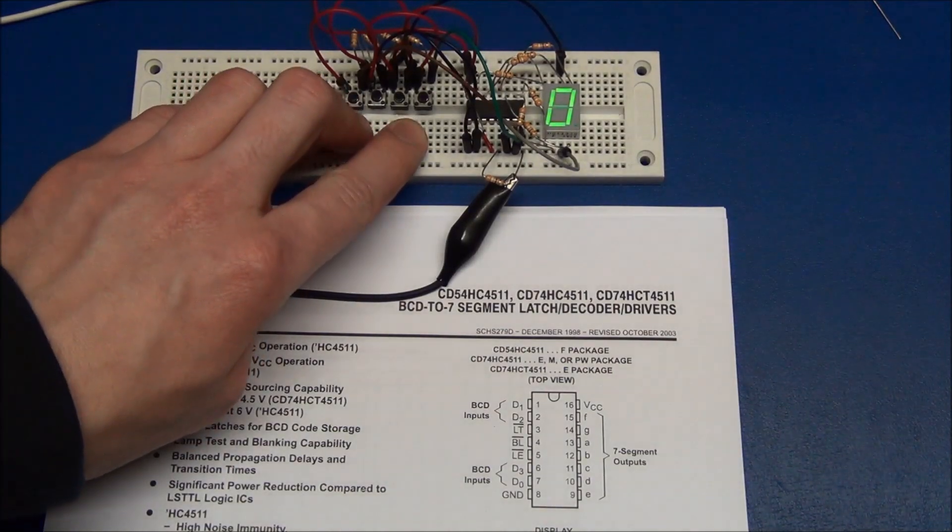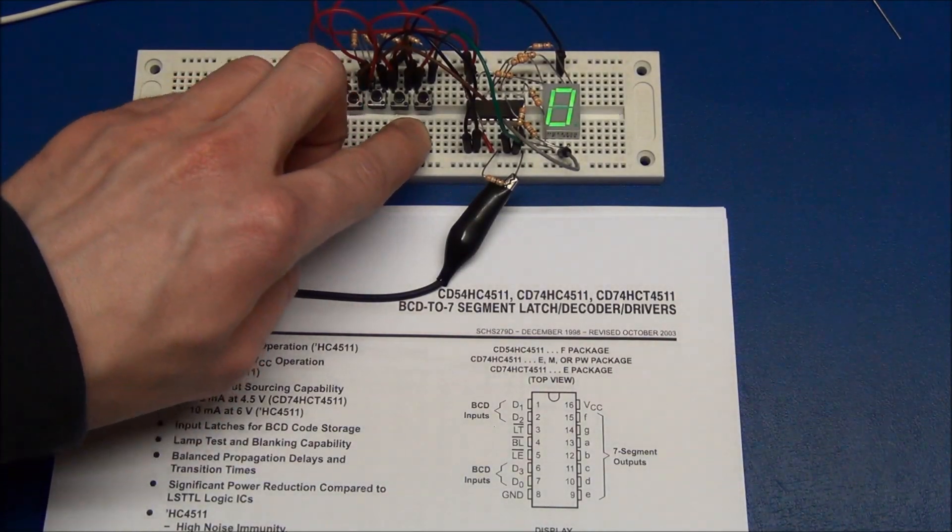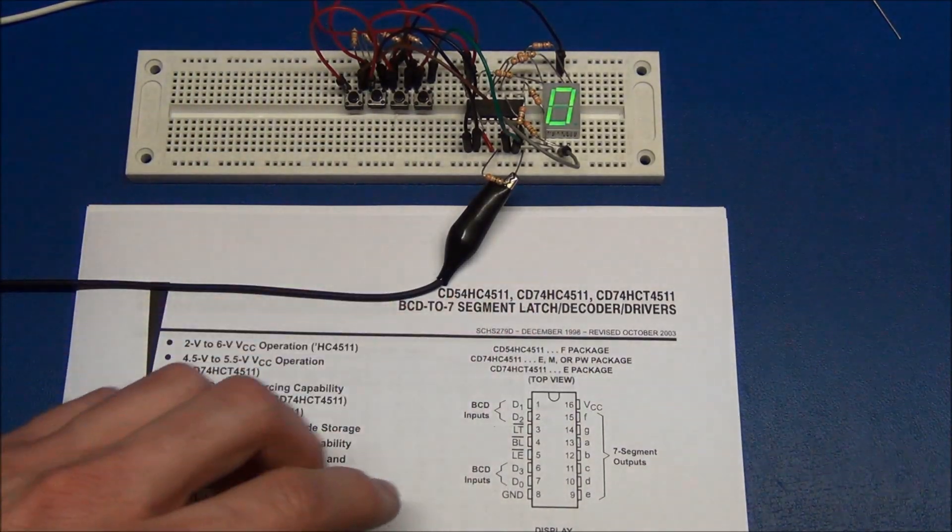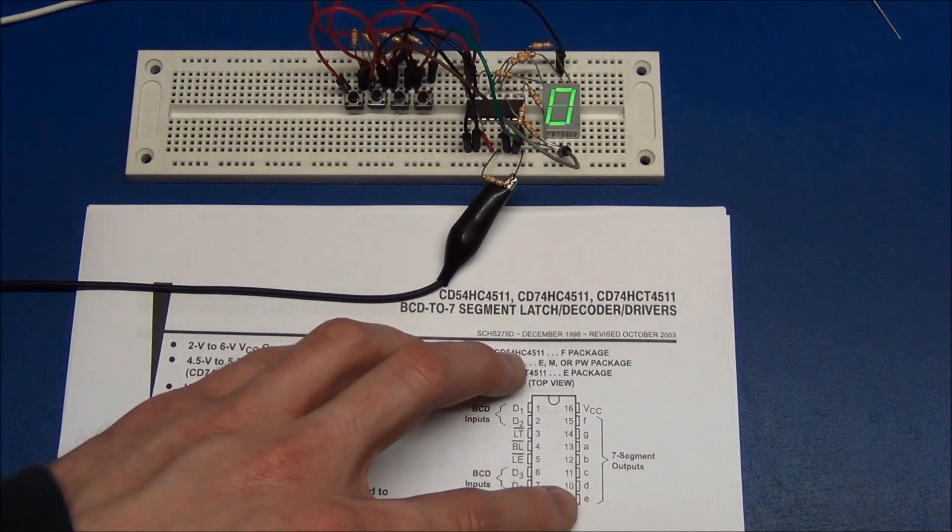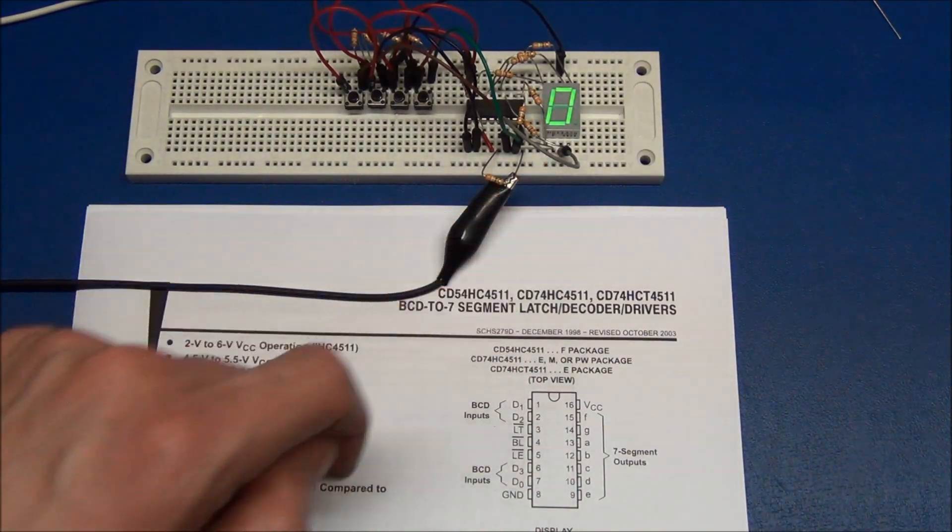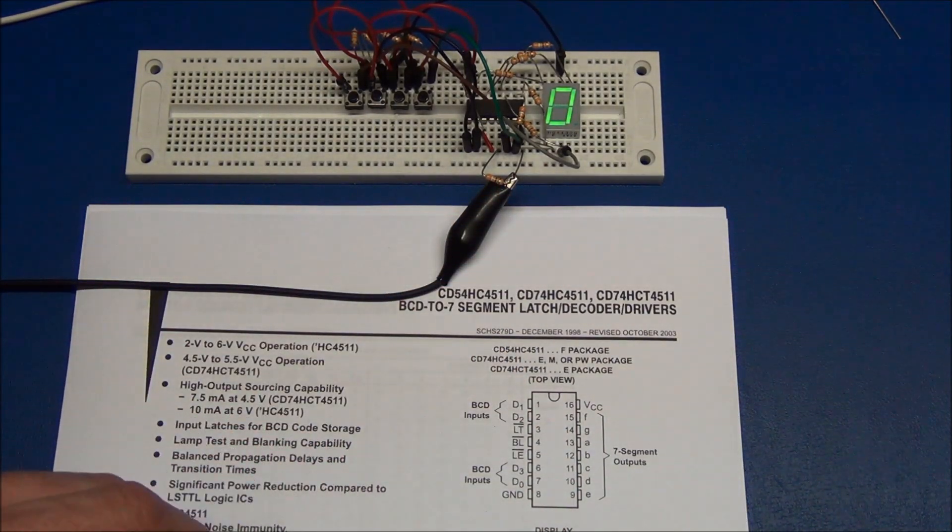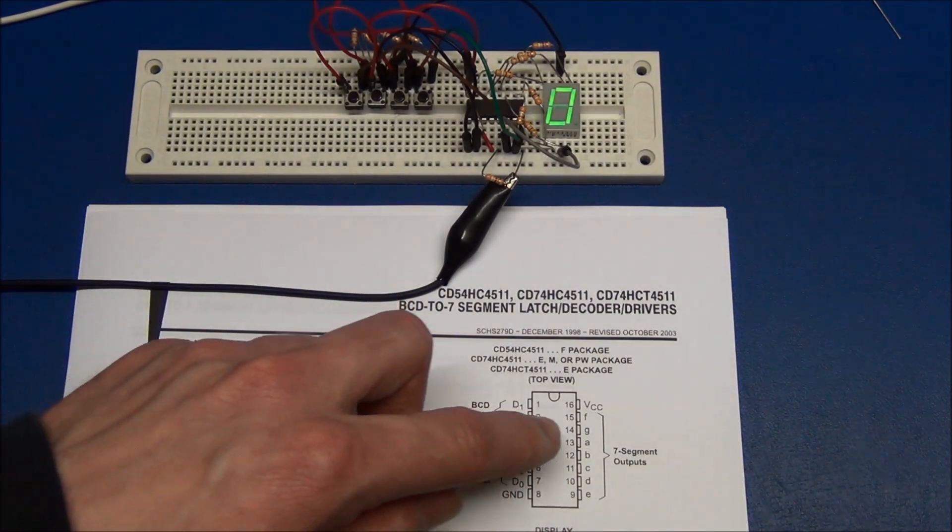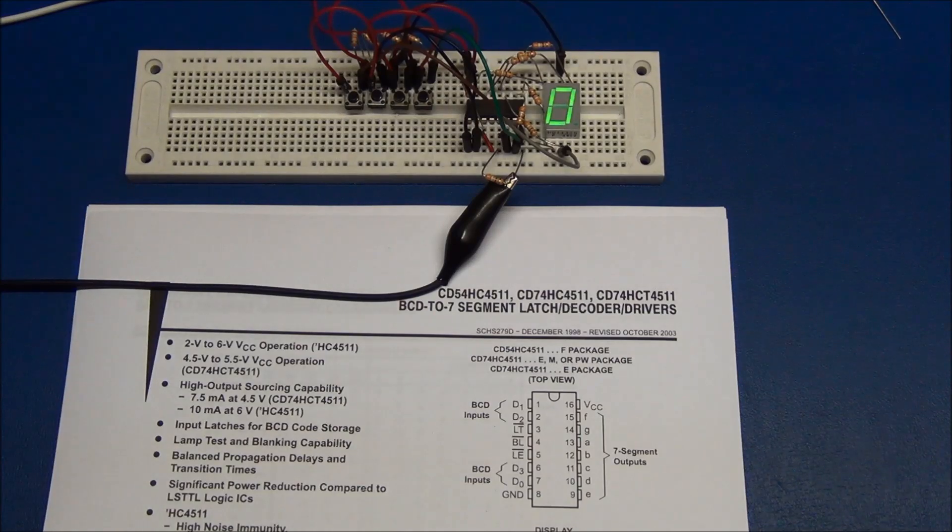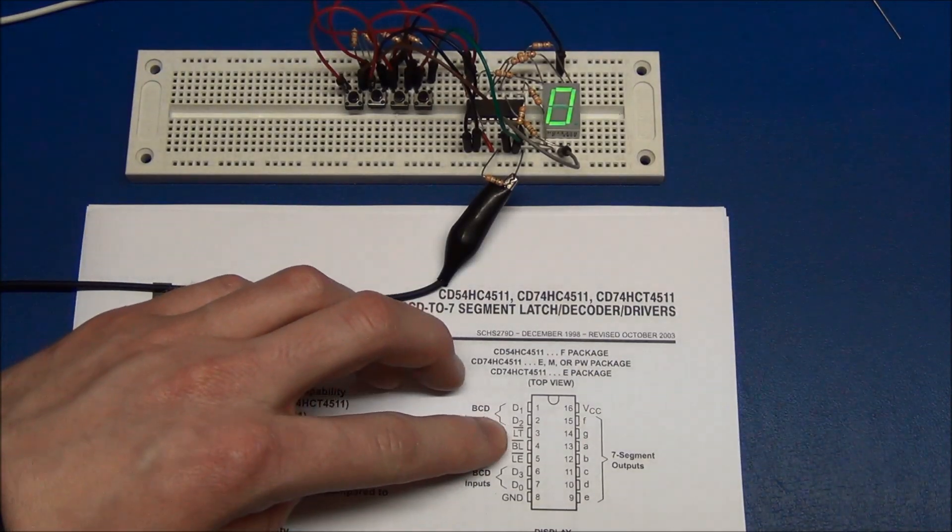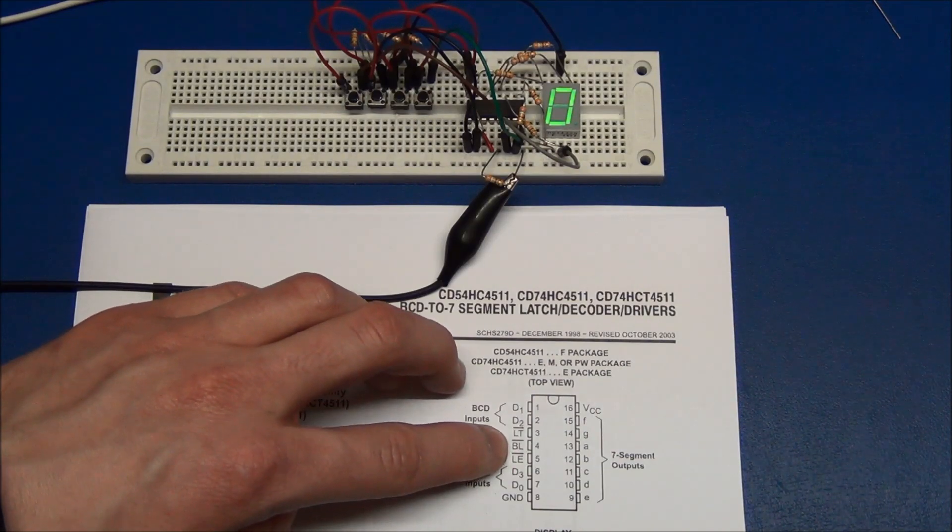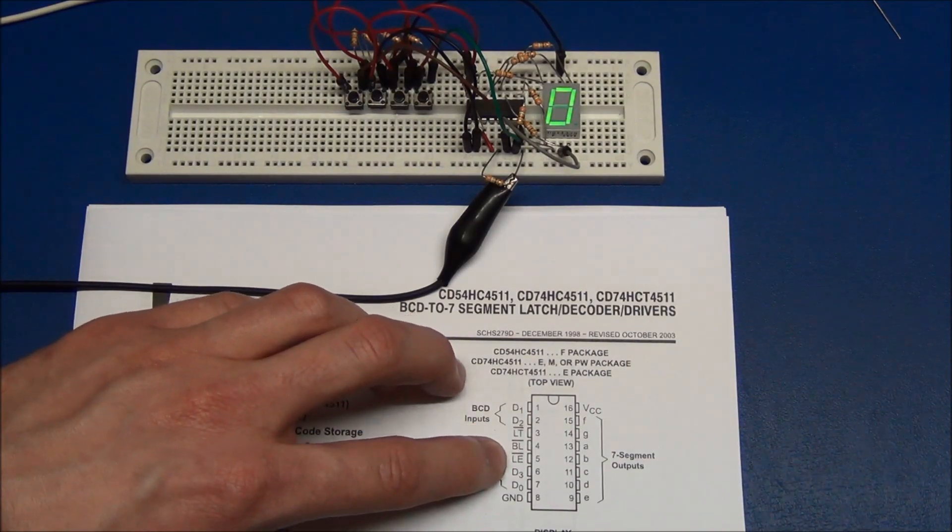So here I have built up what must be the most simple circuit that we can build for this chip. The chip is connected to 5 volts. And these outputs I have simply connected to the display via 390 ohm resistors. This will give us 7 milliamps for each segment. The lamp test and blank input I have connected to 5 volts, and the latch enable I have connected to ground.